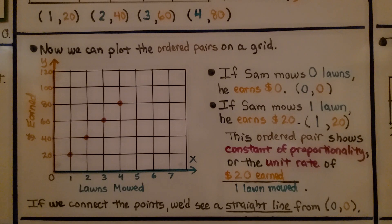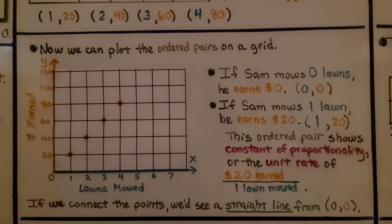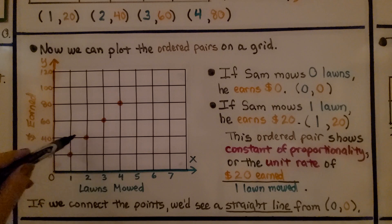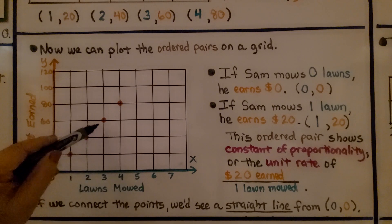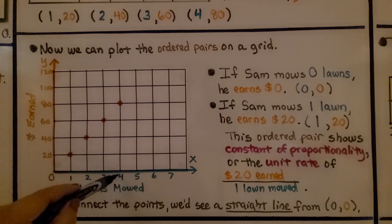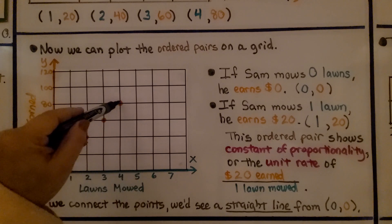Now we can plot the ordered pairs on a grid. We're going to plot these ordered pairs on this grid. We have 1 for x and 20 for y, they meet right here, so we make a point. We have 2 for x and 40 for y, so we put a point here. We have 3 for x and 60 for y, point here. And we have 4 for x and 80 for y, point here.